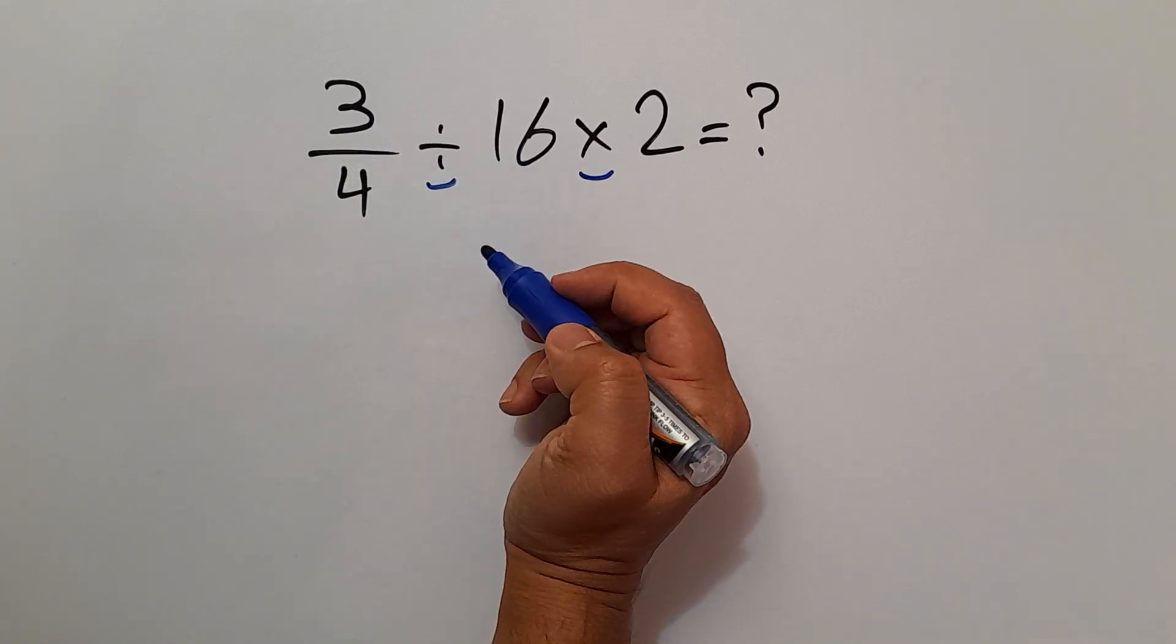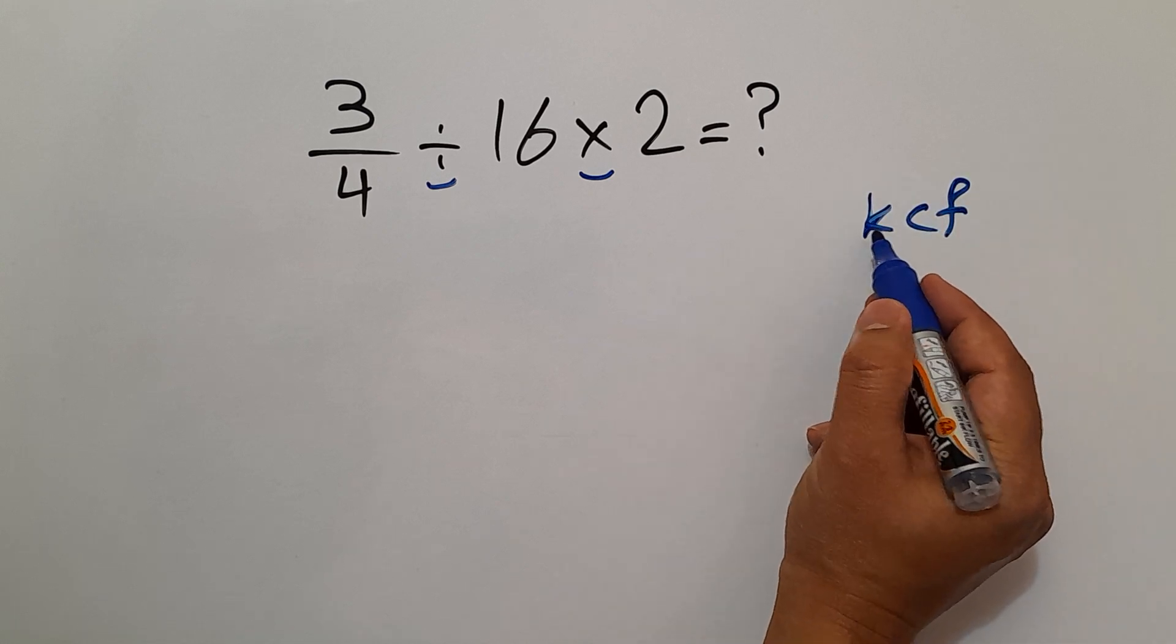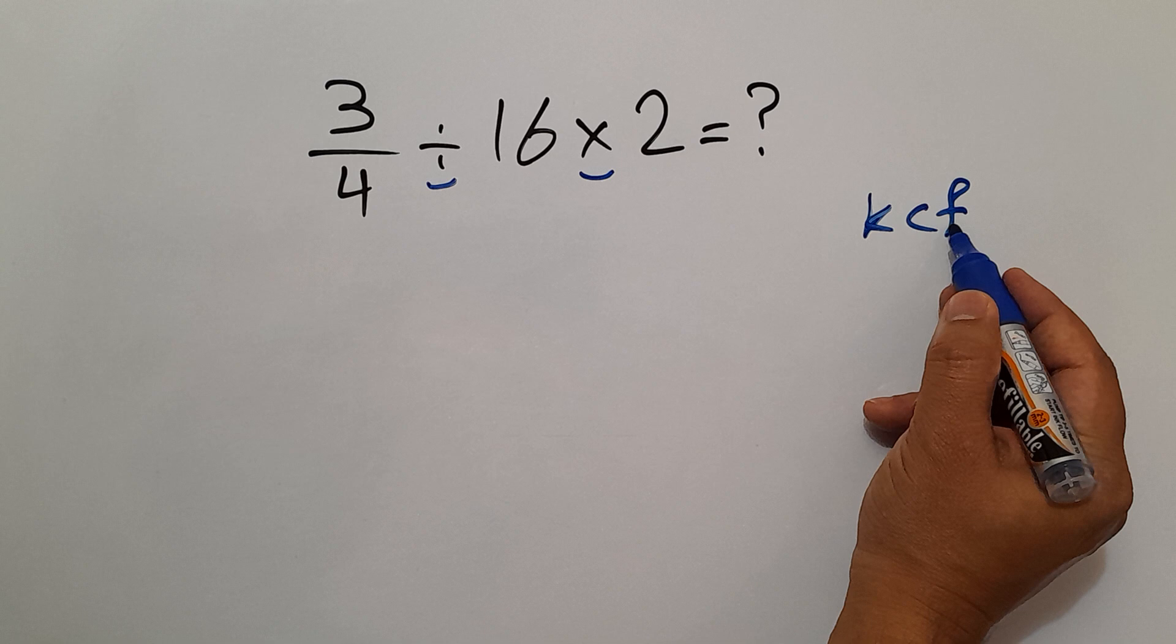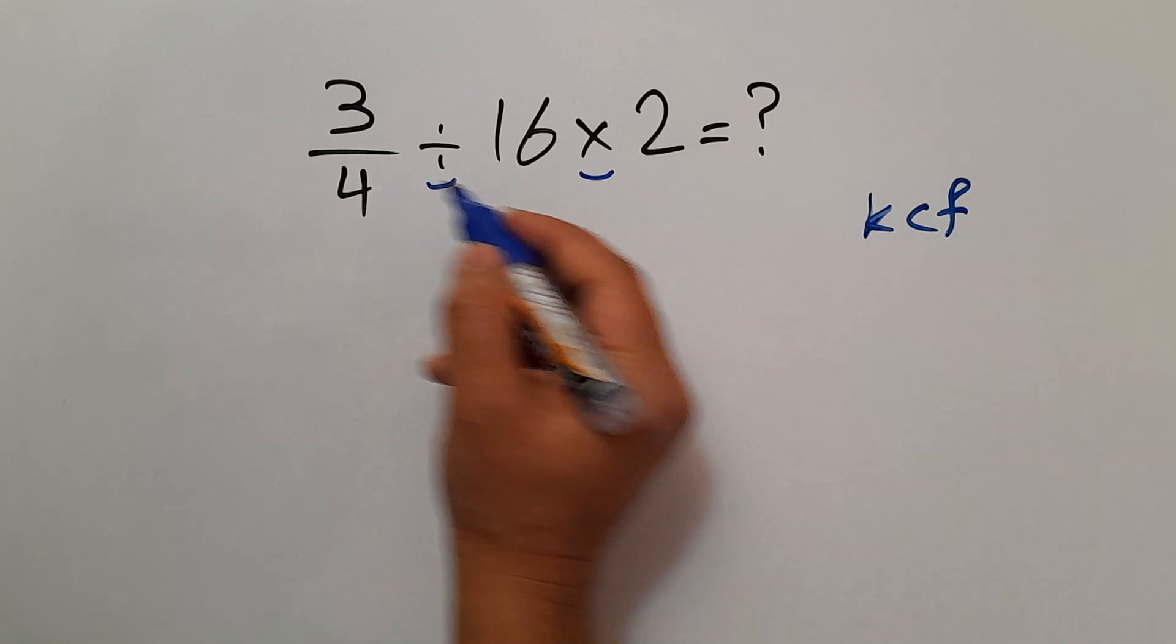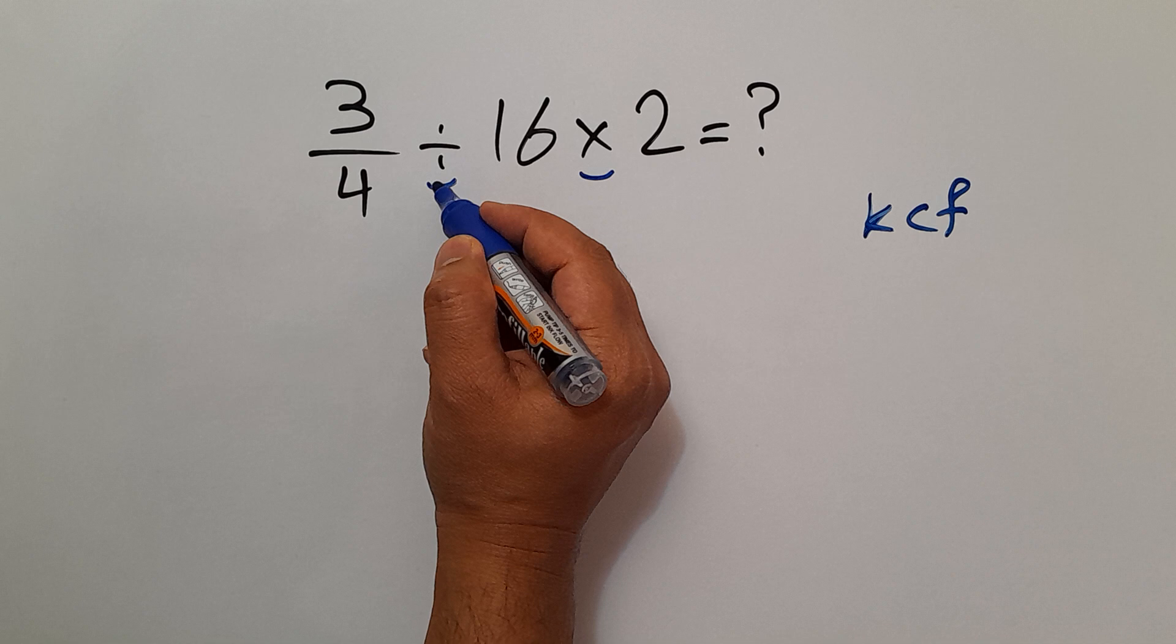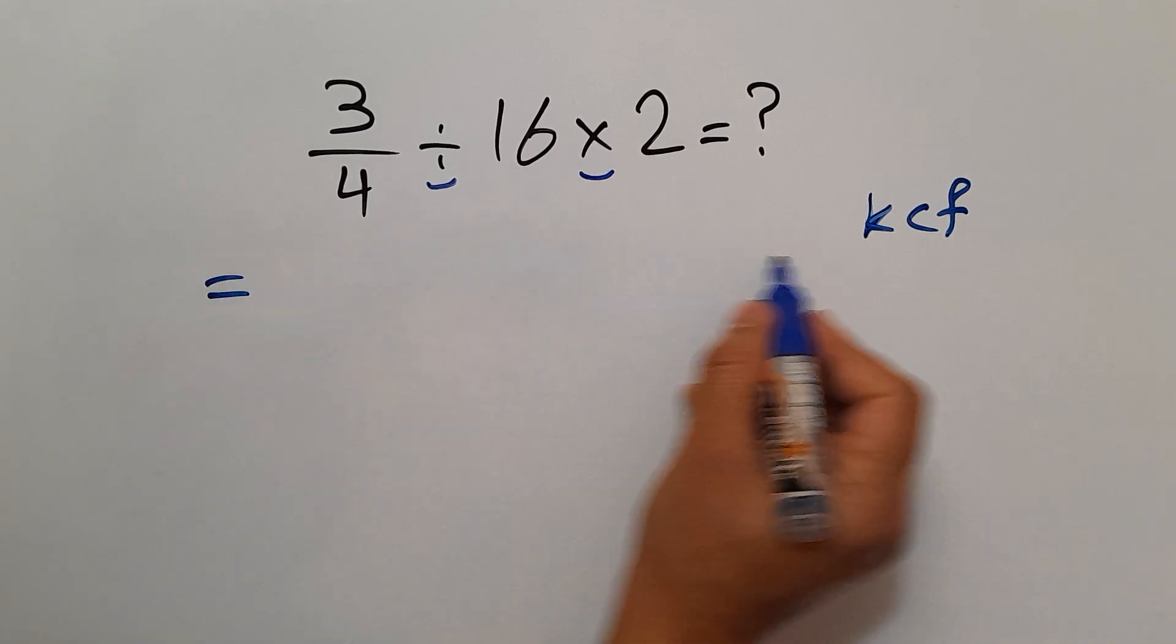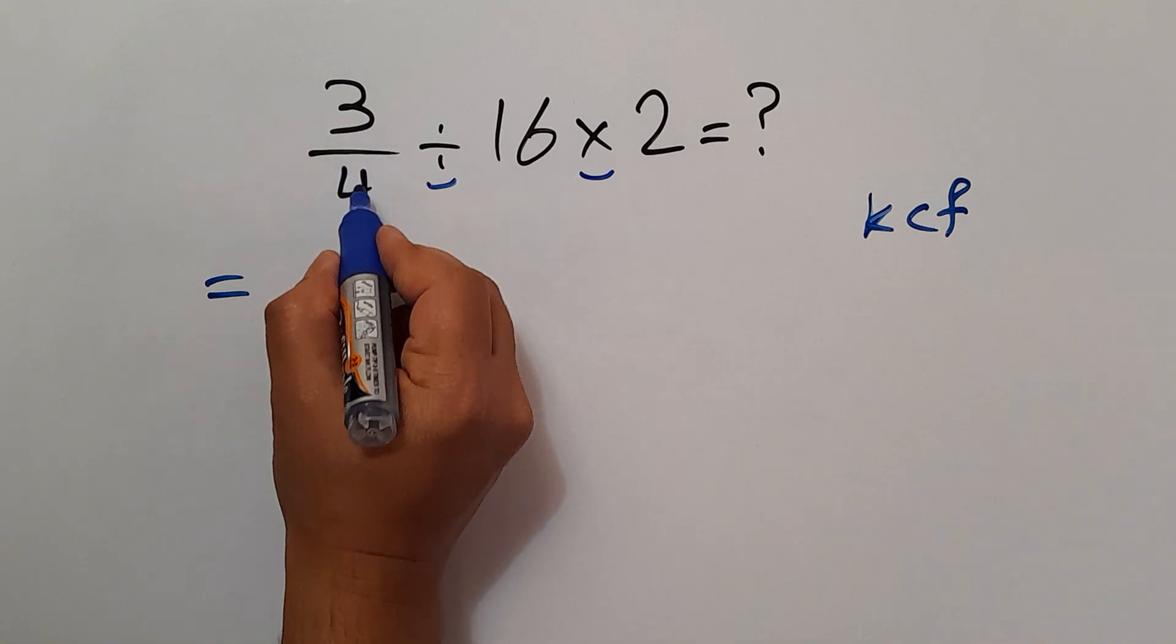According to the KCF rule: K stands for keep, C stands for change, and F stands for flip. Keep the first fraction, change division to multiplication, and flip the second fraction. So according to this rule, 3 over 4 divided by 16...